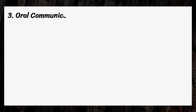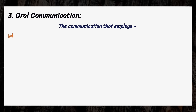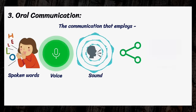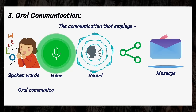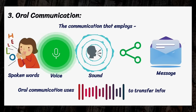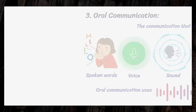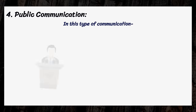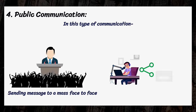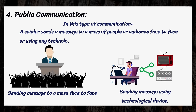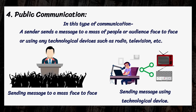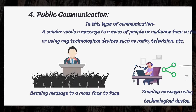Oral communication employs spoken words, voice, and sound to share messages, and uses only one channel — sound — to transfer information. In public communication, one sender sends a message to a mass of people or an audience, face-to-face or using technological devices such as radio, television, etc. The chances of receiving verbal feedback are limited in public communication.